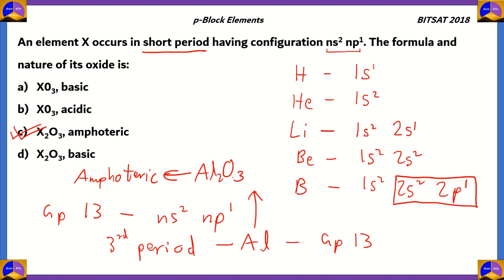X stands for the element, which in this case can be substituted with aluminum. So Al2O3 is the same thing as X2O3. And since Al2O3 is amphoteric, we can say that the formula and nature of the oxide here is also amphoteric. Option C is the correct option for this question asked in 2018.